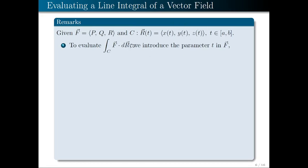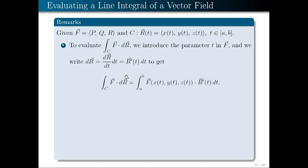Next, we need to replace dr. Using differentials, we write dr = r'(t)dt. Plugging this into the integral, the line integral of F · dr over curve C becomes the definite integral from a to b of F(r(t)) · r'(t)dt. What we have on the right-hand side is the usual single integral in terms of t.